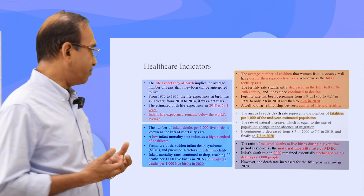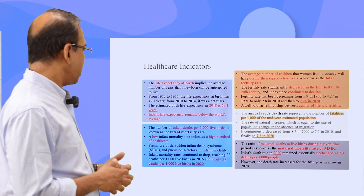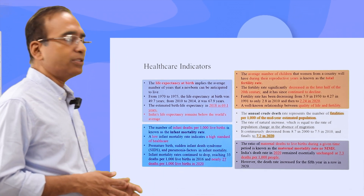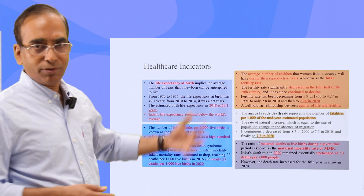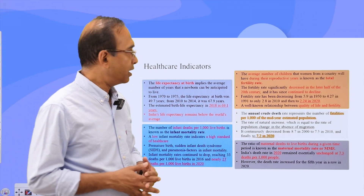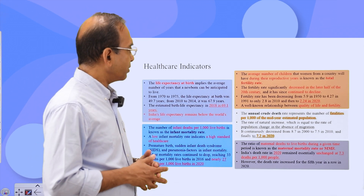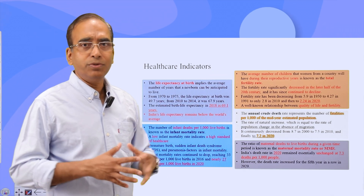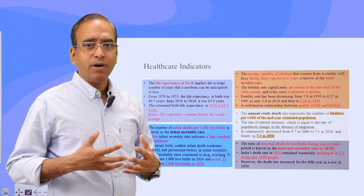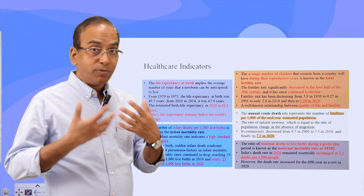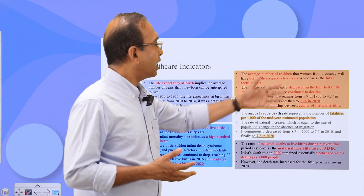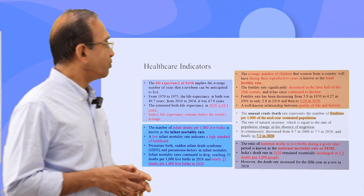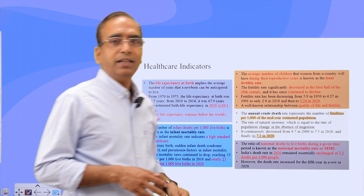In terms of infant deaths, which is basically per 1,000 live births, India made significant progress. Nearly 27 deaths per 1,000 live births in 2020, which dropped significantly. The total fertility rate, which relates to possible population growth, has gone down substantially — it is 2.24 in 2020, whereas it was 5.9 in 1950.